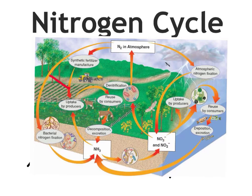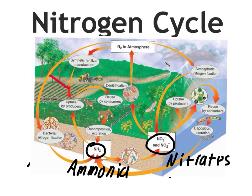One thing we need to talk about are the chemical formulas showing up on the diagram. On this side, these are nitrates, and NH3 is ammonia — technically nitrates and nitrites, but we'll just refer to them as nitrates. Ammonia is important because this is what the bacteria are making during bacterial nitrogen fixation. It's also coming from decomposition and excretion. As the goat goes to the bathroom out in the field, there's ammonia in that. This is one of the reasons that farmers spread manure on fields — it provides nitrogen in the form of ammonia for plants.